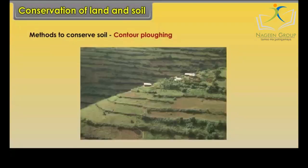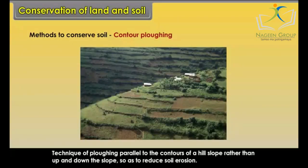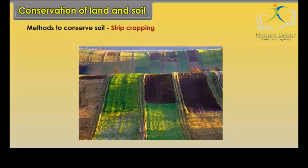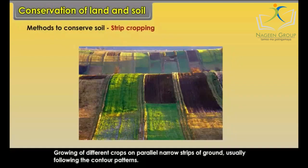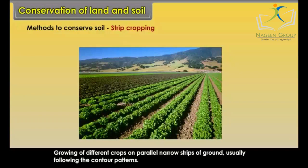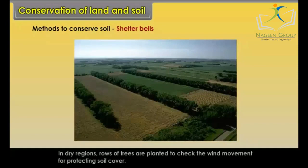Contour ploughing is the technique of ploughing parallel to the contours of a hill slope rather than up and down, so as to reduce soil erosion. Strip cropping involves growing different crops on parallel narrow strips of ground, usually following the contour patterns. Shelter belts: in dry regions, rows of trees are planted to check wind movement and protect the soil cover.